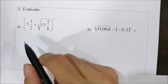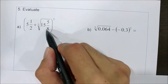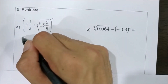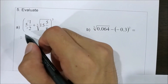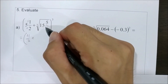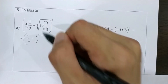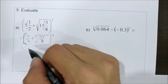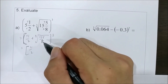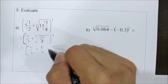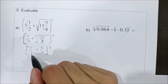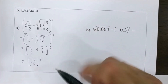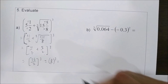Question 5: evaluate. First, convert the mixed number to an improper fraction: 2 times 5 plus 1 gives 11 over 2. Then for the cube root term, multiply and add to get 125 over 8. The cube root of 125 over 8 is 5 over 2. Since both terms have the same denominator, add the numerators: 11 plus 5 is 16 over 2, which equals 8.